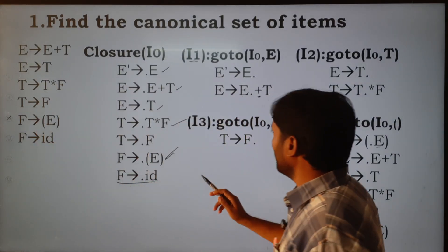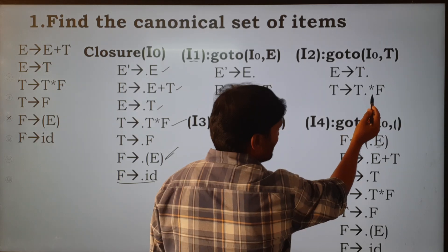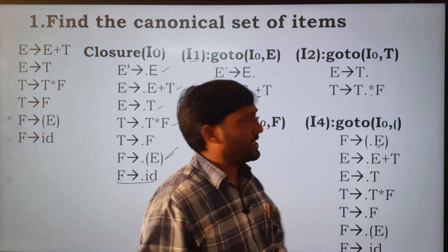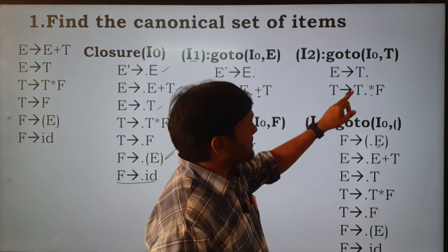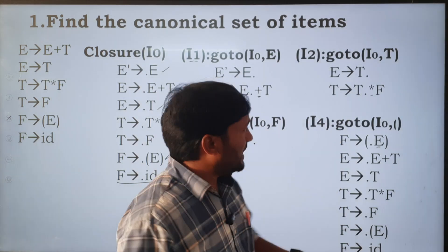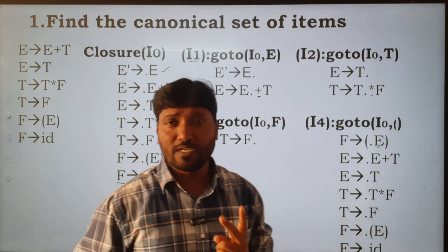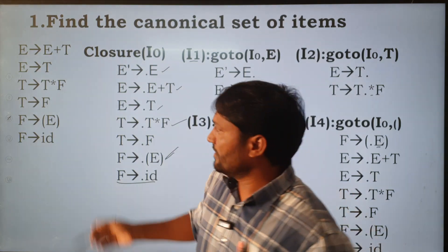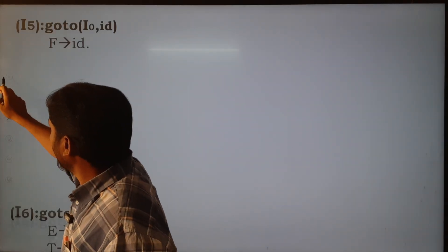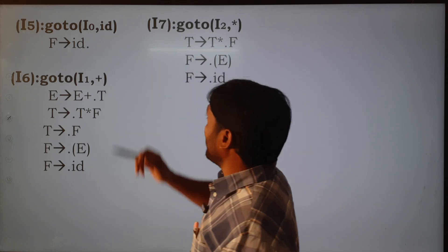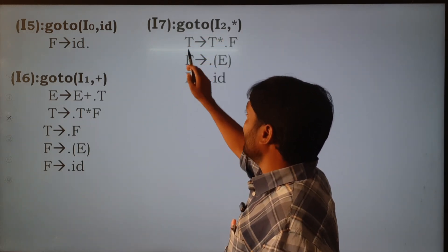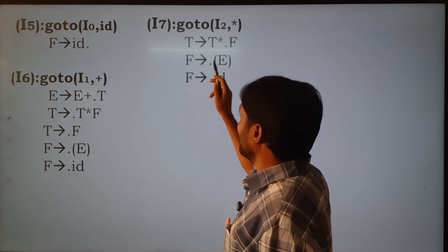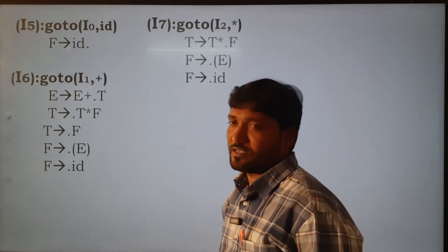I1 is over. Come to I2 — in I2 there is a star after the dot, so we apply the goto function for star. Applying goto for star: T → T*.F. Then since F is after the dot, F has two productions; we add those two productions with dot. This is goto(I2, star).